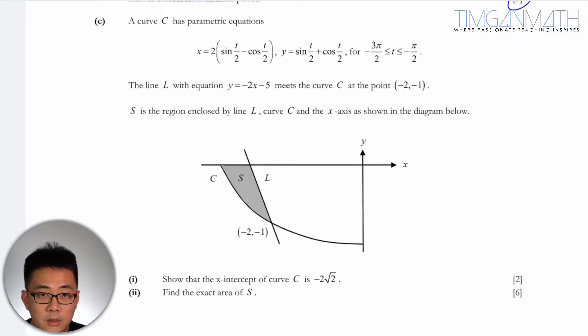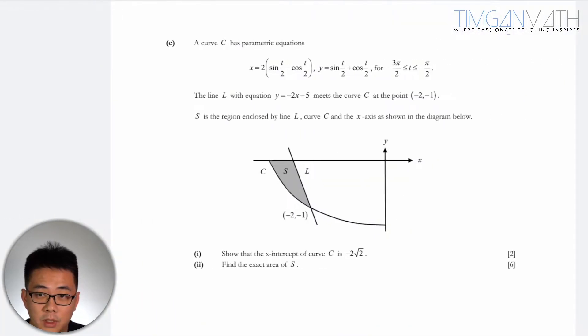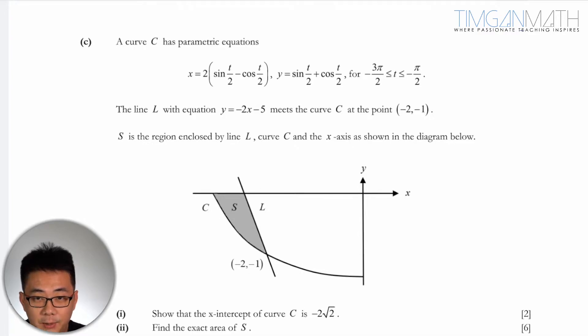So let's look at part C. The curve C has this parametric equation here. The line L has this equation, meets the curve C at point (-2, 1). So this is line L here, this is the curve here.